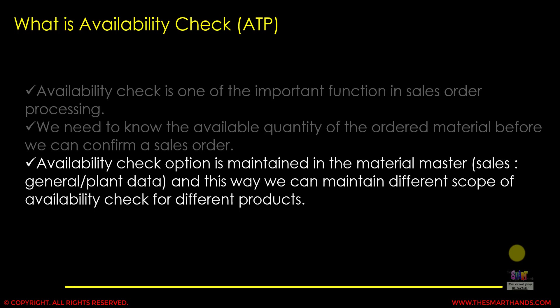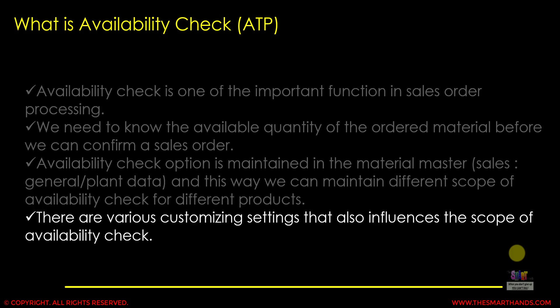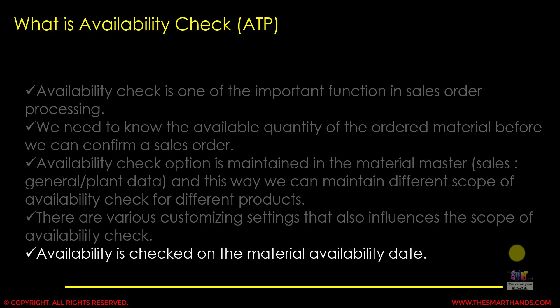This way we can maintain different scopes of availability check for different products — meaning we can have one rule for one type of product and a different rule for another. We'll see how to set this up in the next customizing video. There are also various customizing settings that influence the scope of the availability check. The check is performed on the material availability date, which we discussed in the previous video on backward and forward scheduling.